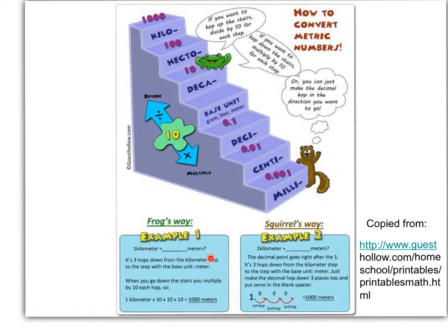Here we have one kilometer, and we want to convert it into meters. Going up to kilometer, I need to get down to meters — my base unit. I'm going to hop one, two, three times down the stairs, and down is to the right. So I start at my 1 and move three places to the right: one, two, three — and I get 1,000 meters. When you go down, you multiply by ten for how many places you go, so one kilometer times ten three times gives you a thousand meters.